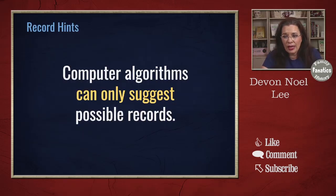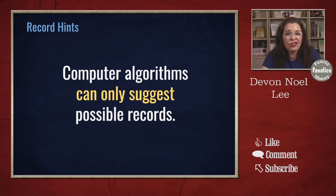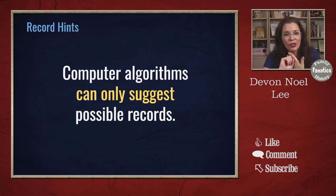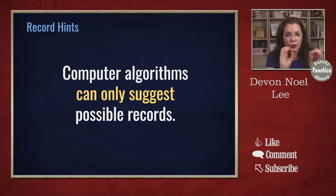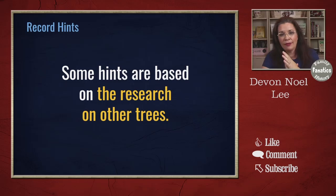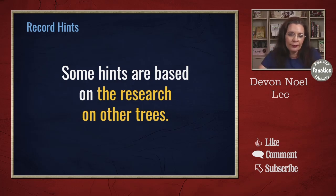Recognize that computer algorithms can only suggest possible records — you need to go and verify the information, and sometimes you're going to have to browse manually. Once you get into one record, you might have to turn pages. Look for a common name in the year where you think your relative is buried, married, or born, and then page forward and back to find relatives who may have been skipped or improperly indexed. Like many other platforms, Find My Past bases hints on trees other researchers have built and the records connected to them — trust, but verify. Always trust, but verify.